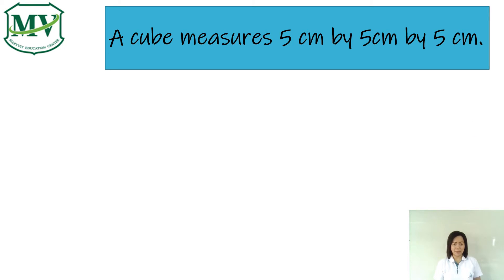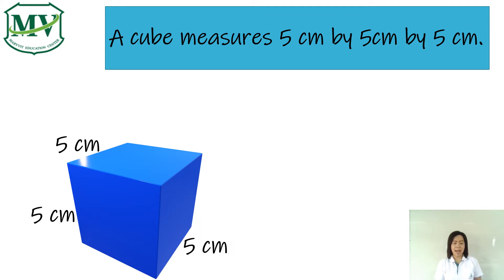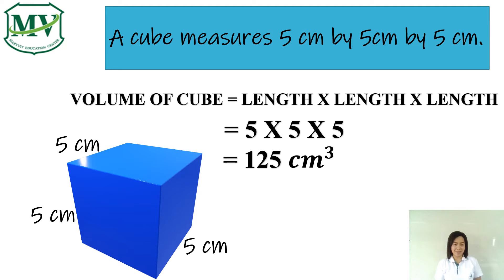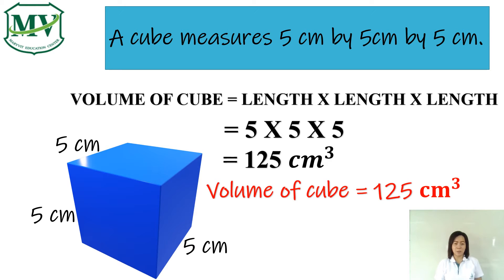A cube measures 5 centimeters by 5 centimeters by 5 centimeters. Let's find the volume of this cube. Since the length of each side of a cube is the same, we use the formula: volume of cube is equal to length times length times length. So, 5 times 5 times 5 equals 125 cubic centimeters. Therefore, the volume of this cube is 125 cubic centimeters.